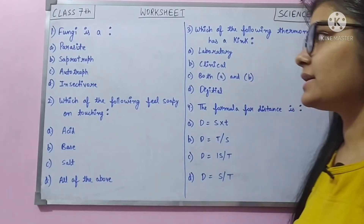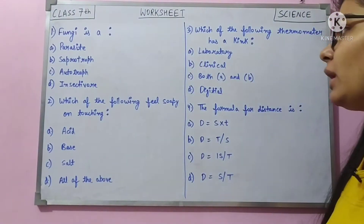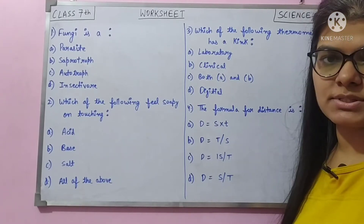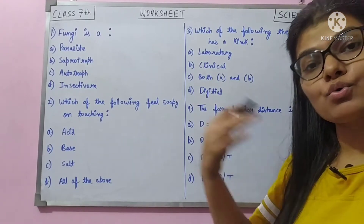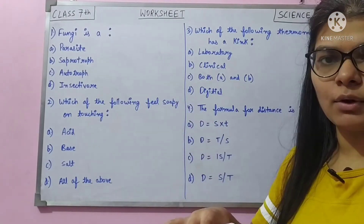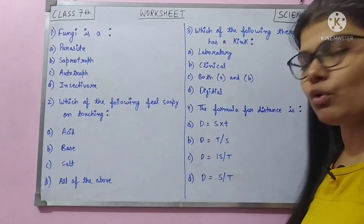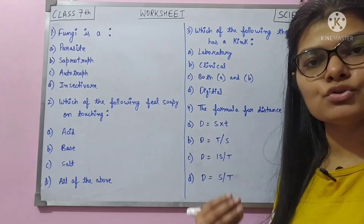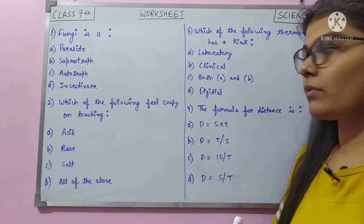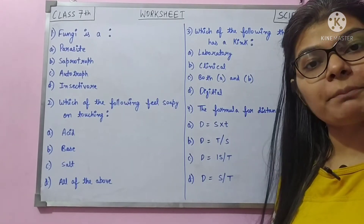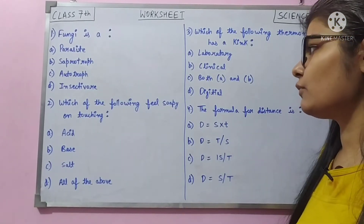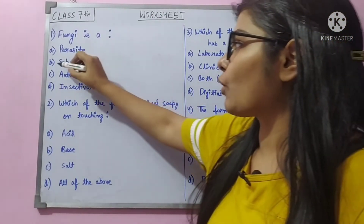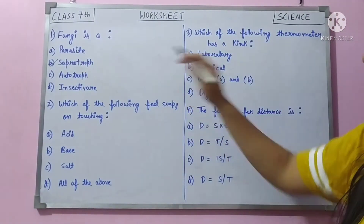First question: fungi is a — parasite, saprotrop, autotrophic, or insectivorous? Parasites live on or inside a living host body. Saprotrophs feed on dead and decaying matter — dry leaves or any unwanted substances. Autotrophs produce their own food. Insectivorous organisms feed on insects. So fungi is a saprotrop. Answer is B.